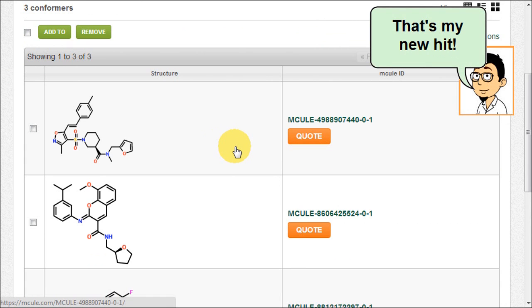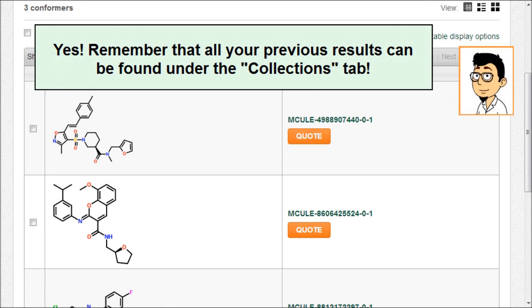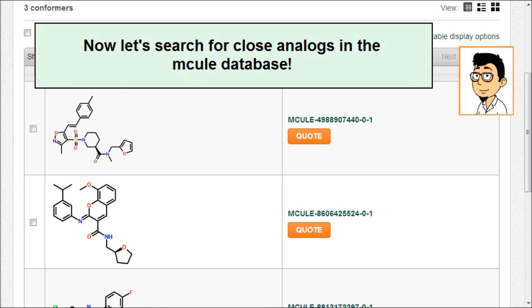Hey, that's my new hit. Yes. Remember that all your previous results can be found under the Collections tab. Now let's search for close analogs in the mcule database.